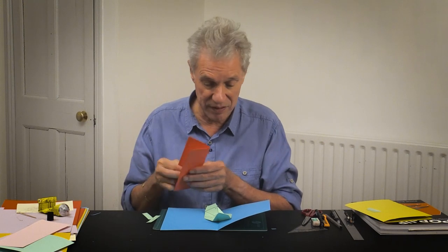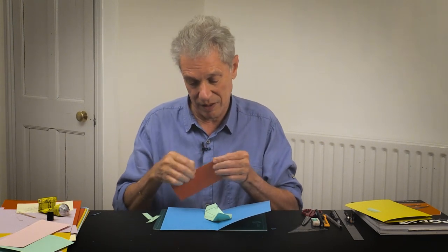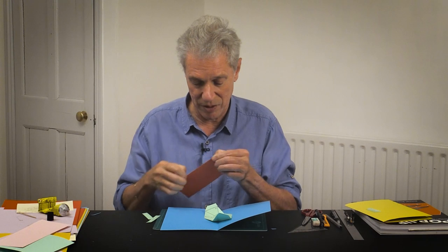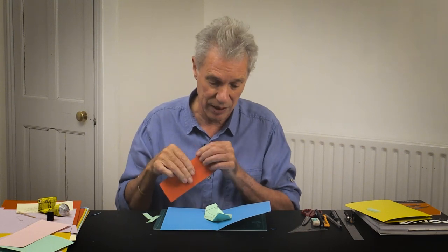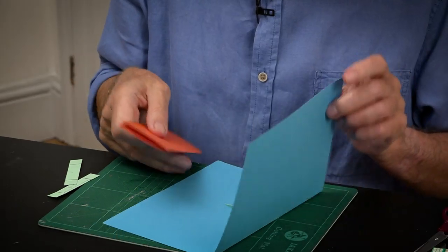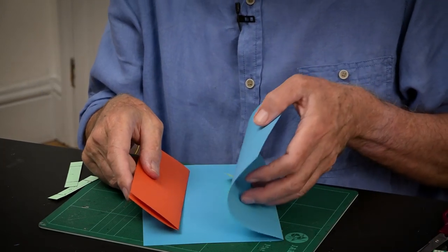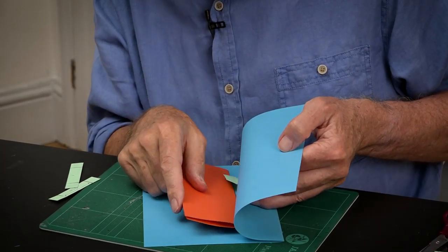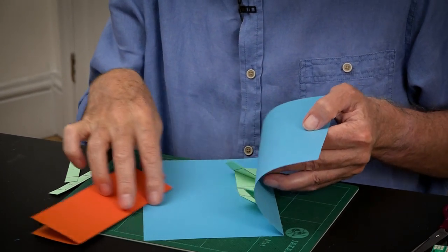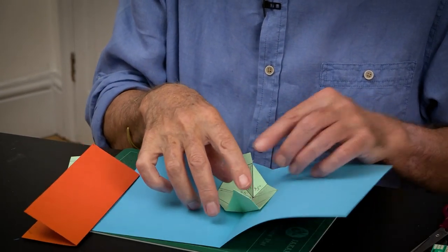So now get this. Make sure the crease is really well established so that it will move nicely once it's stuck in place. And this is going to stick onto these two tabs. But we have to put it into the closed position so it can find where it wants to be. And we want the tabs both underneath it, balancing on each side.